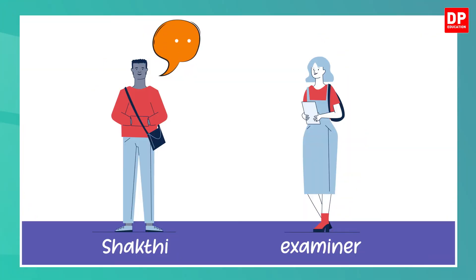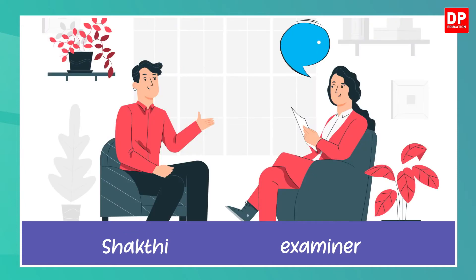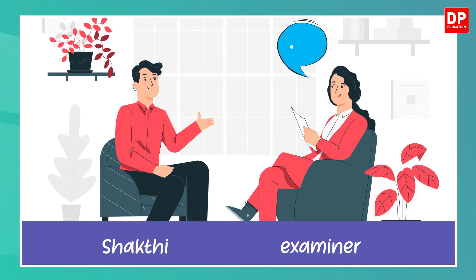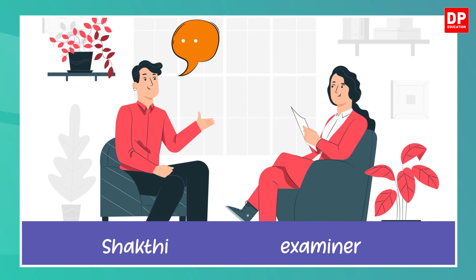Good morning, madam. May I come in? Good morning. Please sit down. How are you? I'm fine, thank you, madam. Tell me your name with initials, please. I am MTNS Peeris. My first name is Shakti. Shakti, tell me about your best friend. He is Chamudita. He is also in grade 10. He is dark and pleasant. He is kind and very helpful. What do you do in your leisure time? My hobby is reading books. Why do you prefer reading? Because my ambition is to be a journalist. Okay. Study this picture and talk about it for two minutes.